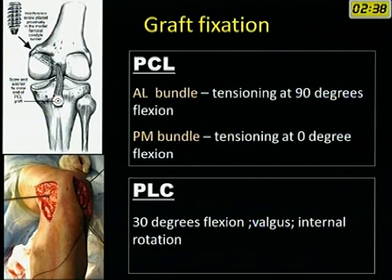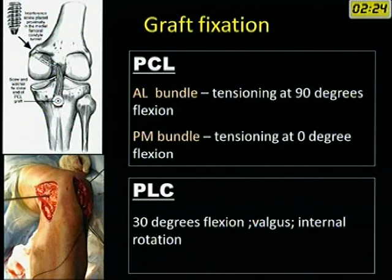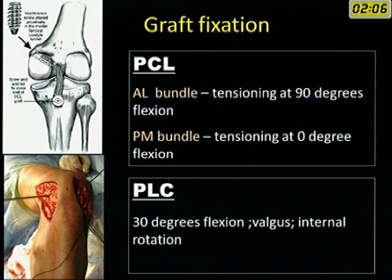Once the graft is passed, it must be fixed. For the PCL single bundle anterolateral reconstruction, you fix the graft after tensioning at 90 degrees of flexion, having reversed the posterior shift and recreated normal tibiofemoral offset. For the posteromedial bundle, tensioning is done at 0 degrees of flexion. For the posterolateral corner graft, you tension at 30 degrees of flexion with valgus and internal rotation.